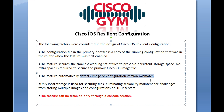The feature automatically detects image and configuration version mismatches — we'll take a look at that on the CLI. Only local storage is used for securing files. If you're getting your config from a TFTP server or some outside source that's not local to your device, this is not going to work.